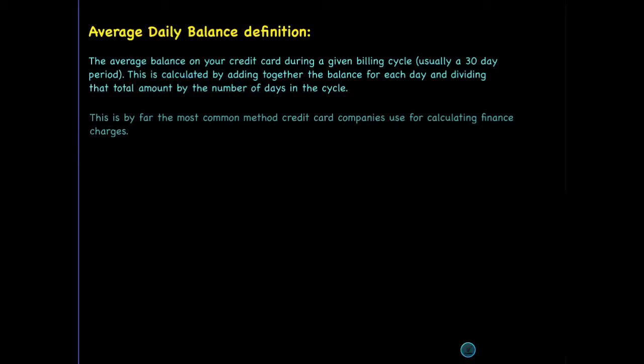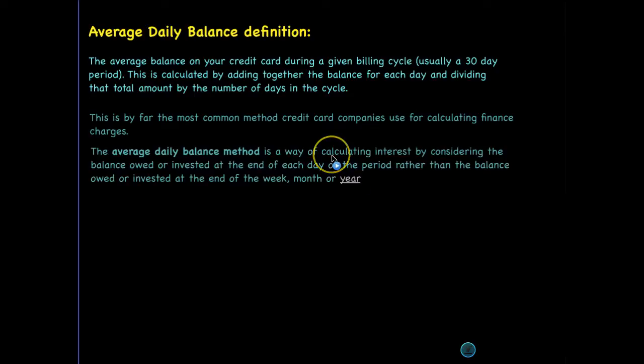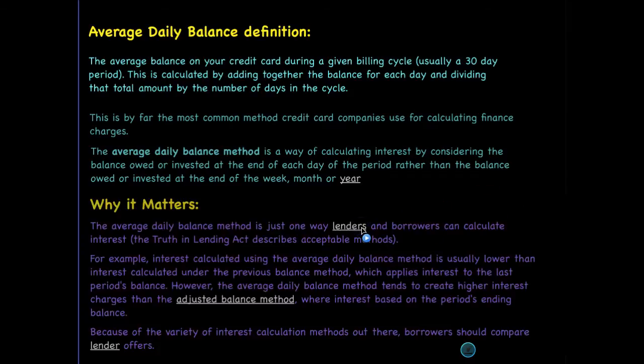This is one of the most common methods used by credit card companies, which is why we are exploring it today. The average daily balance method is a way of calculating interest by considering the balance owed at the end of each day — that's why it's called an average daily balance, versus at the end or beginning of each month.